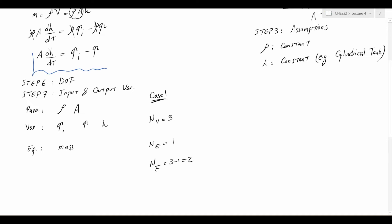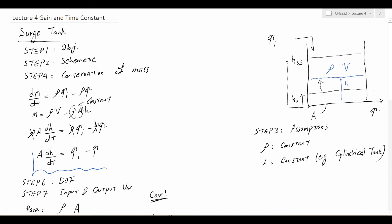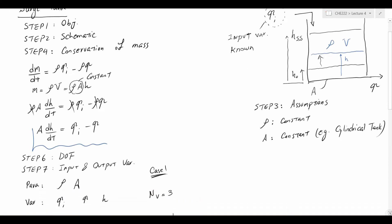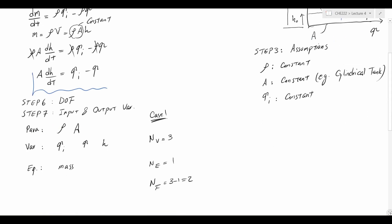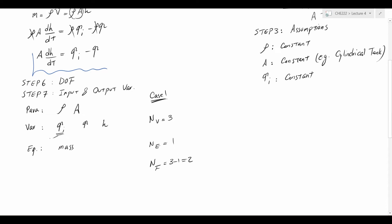Let's get into step seven and identify input and output variables. One way is to assume the inlet flow rate Q_i is the input variable and it is known. To simplify further, I can assume Q_i is constant. This gives us Case 2: number of unknown variables becomes two, number of equations is still one, and degrees of freedom becomes one. We still need to utilize one more degree of freedom.